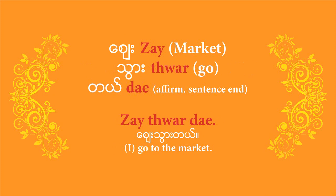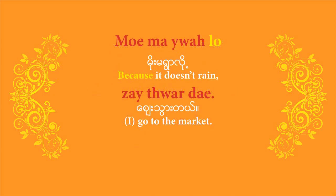With that, you can add the consequence of not raining. For example, 'ze thware de' — I go to the market. 'Ze' is the word for market, 'thwa' is the verb to go, and 'de' is the affirmative sentence-end. Put it all together: 'mo me joare lo ze thware de' — because it doesn't rain, I go to the market.